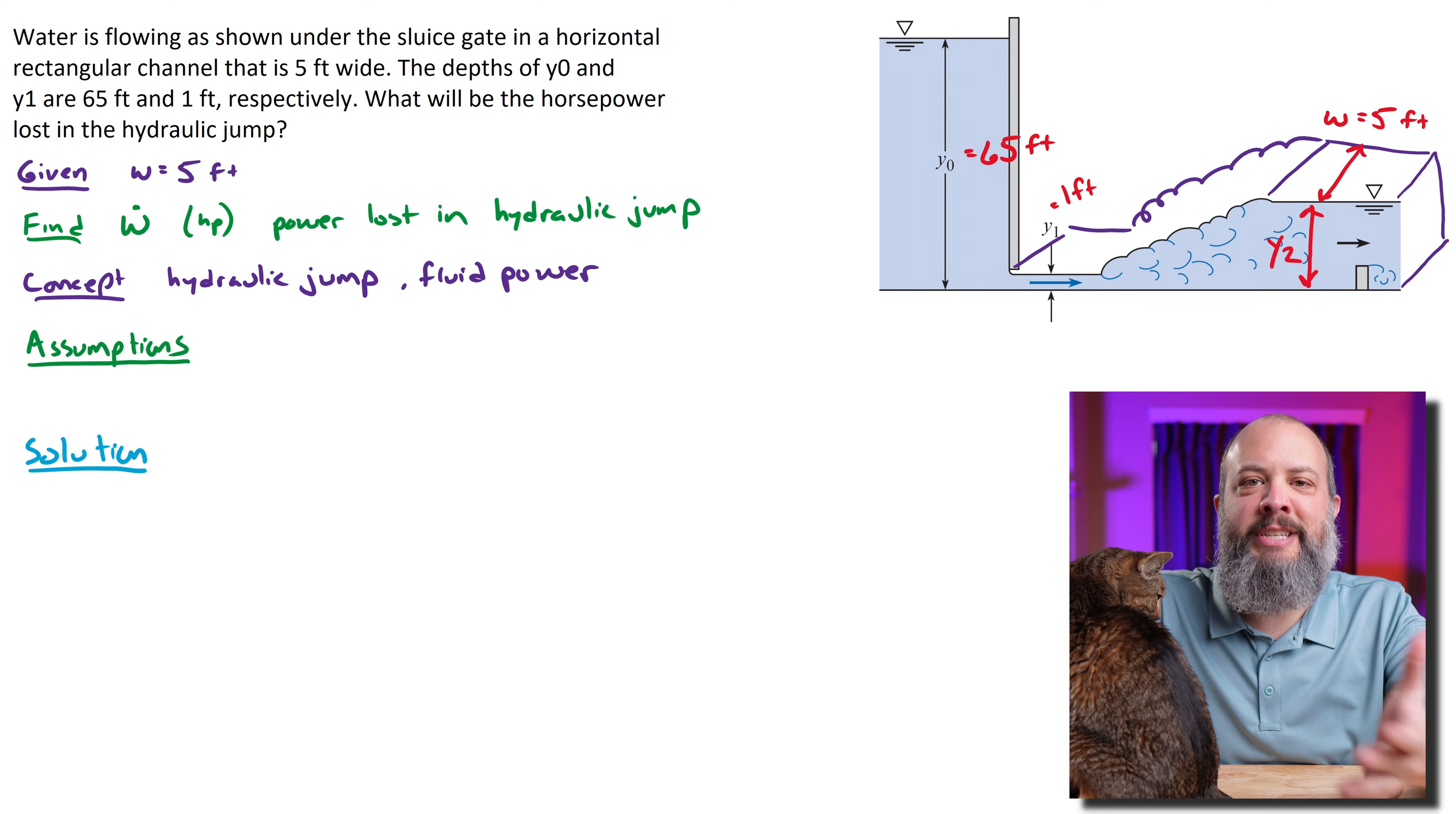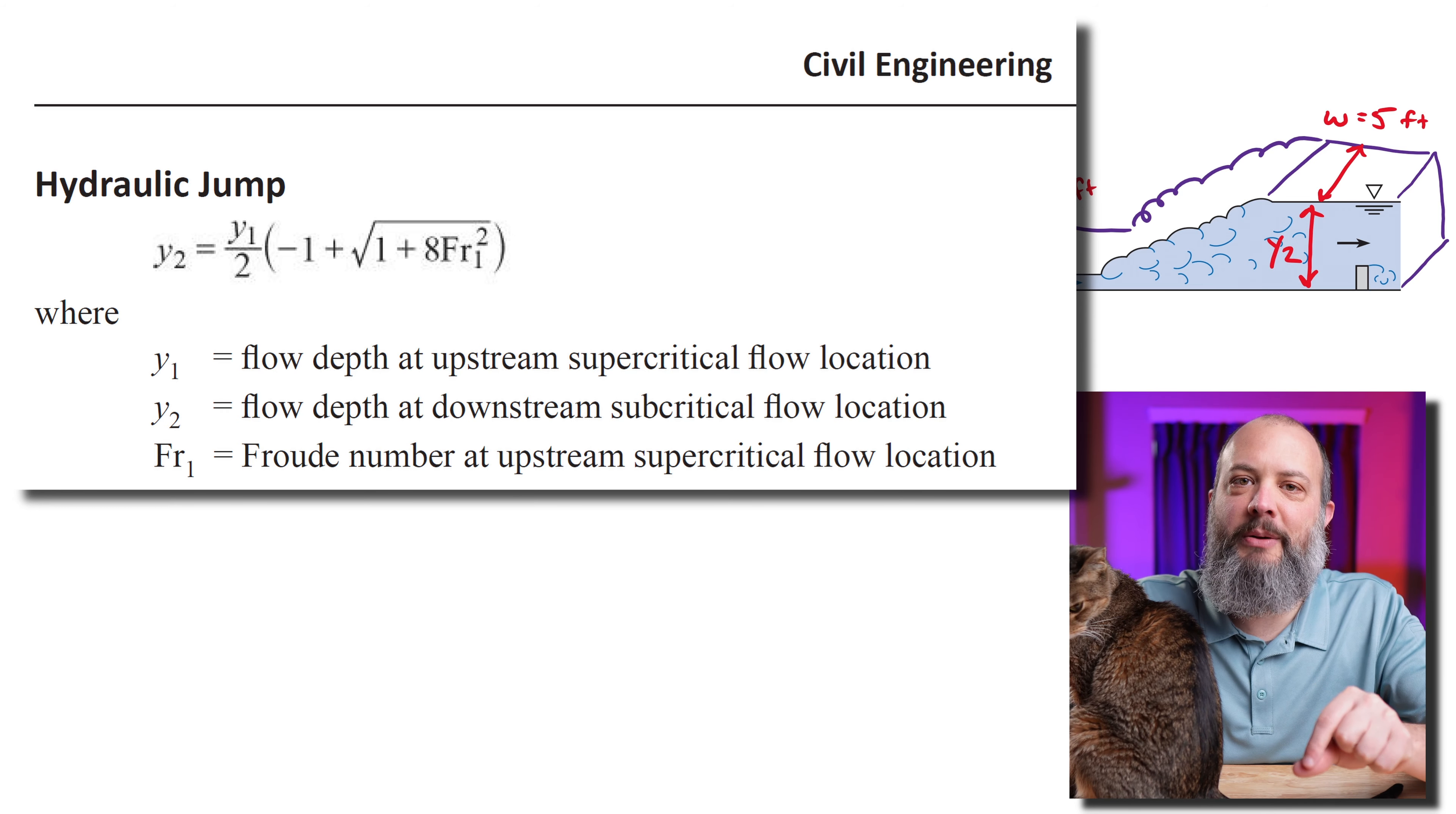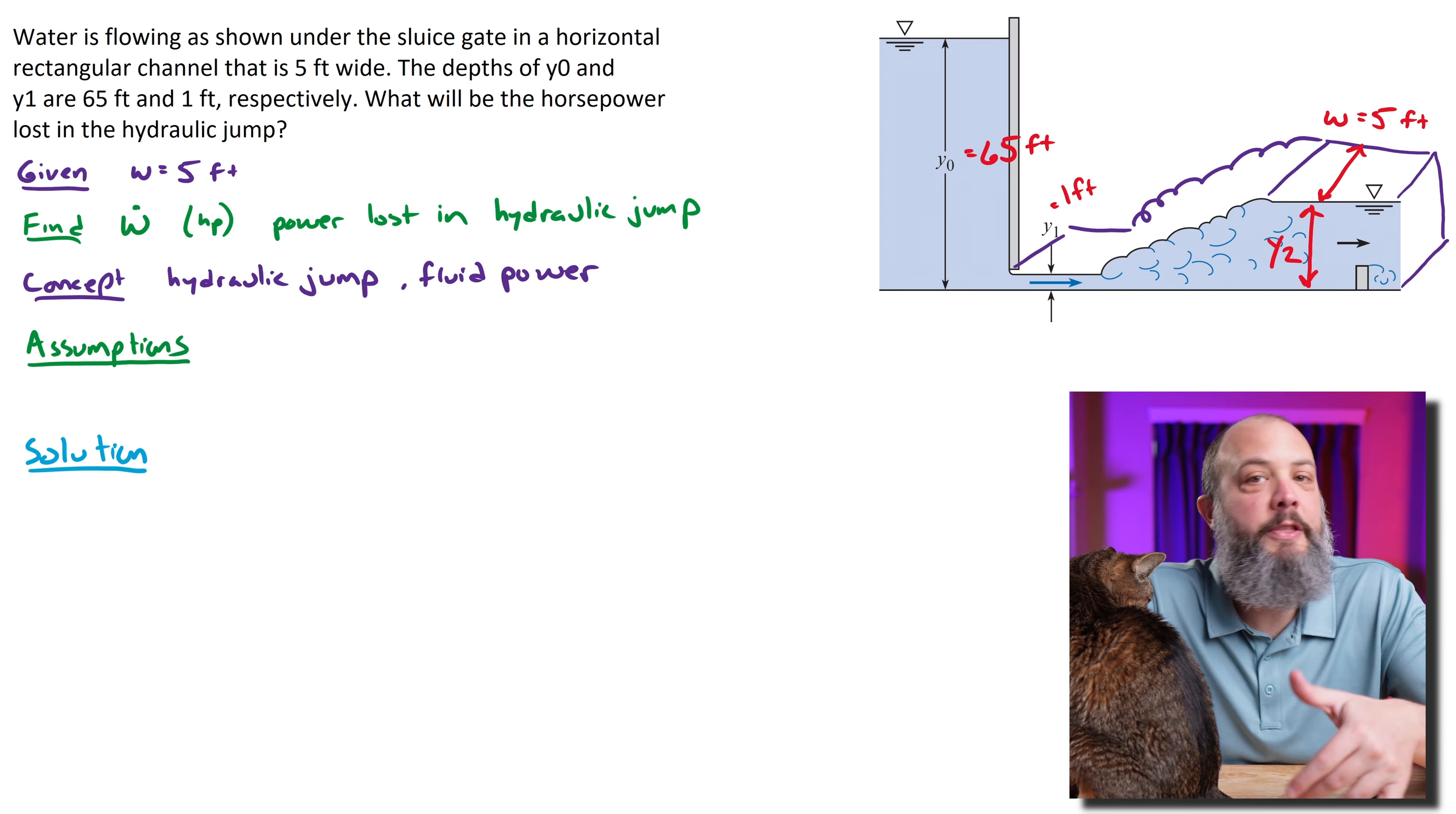In the open channel flow section of your textbook or the civil engineering section of the FE reference manual, you'll find the hydraulic jump equation easily. That's what you use to find the change in depth from before to after the jump. But what's not immediately obvious is how to find power loss. For this you'll need to look in a different chapter—in the fluid mechanics section for pump power or fluid power.